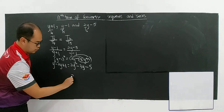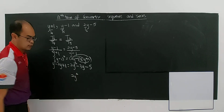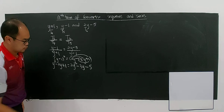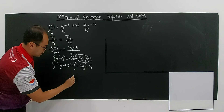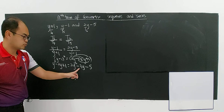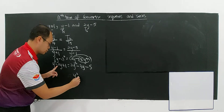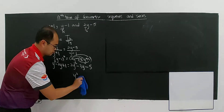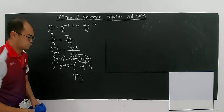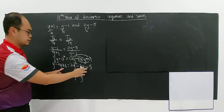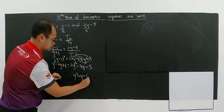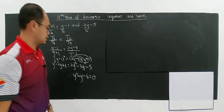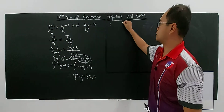Rearranging, you get y squared, then negative 3y plus 2y gives you negative y, and negative 5 plus 1 becomes negative 6, all equals to 0. So you have y² minus y minus 6 equals 0. Of course, if you arrange this it will be a quadratic equation. Now factorize to find the possible value of y.